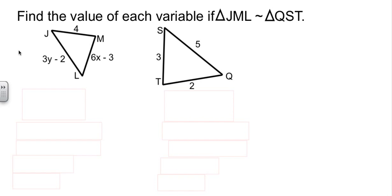They're also going to ask us to find the value of the variable, or variables in this case, if we know we have similar triangles. JML similar to QST.